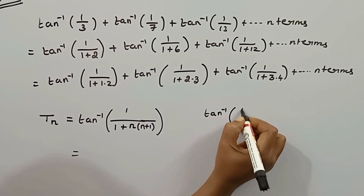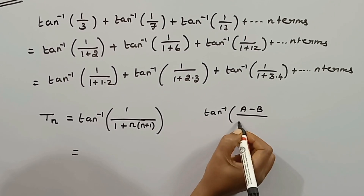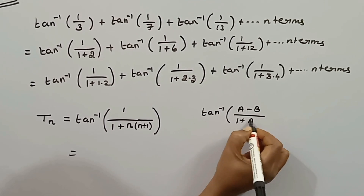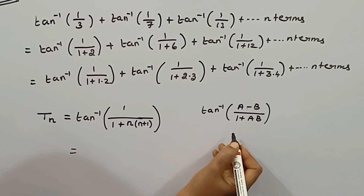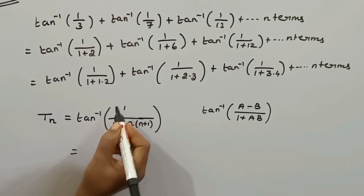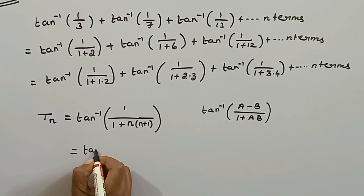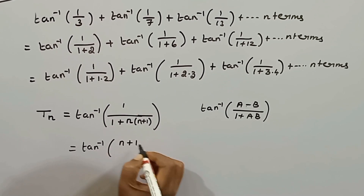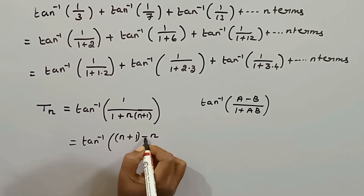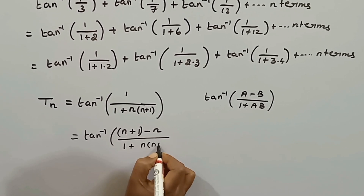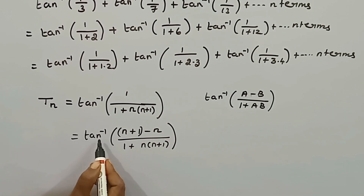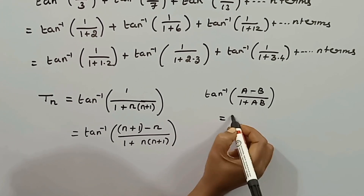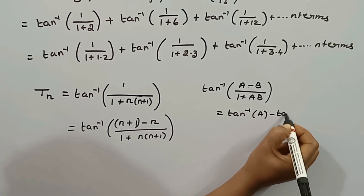Tan inverse of a minus b divided by 1 plus ab equals tan inverse of a minus tan inverse of b. If we apply this formula, we can express each term as a difference of two arctangents. This allows us to use the method of differences to complete the telescoping cancellation.